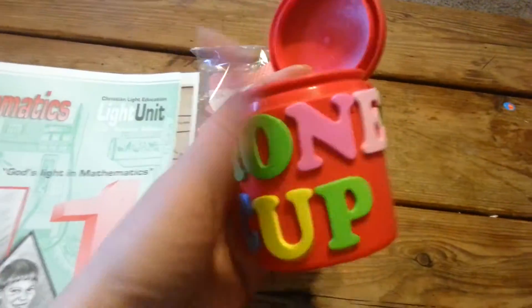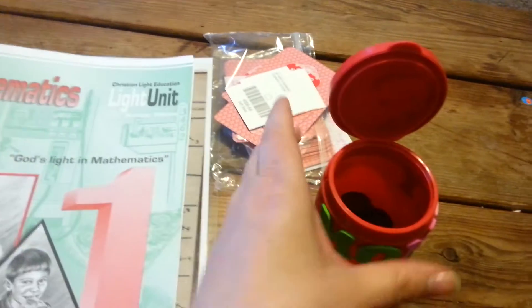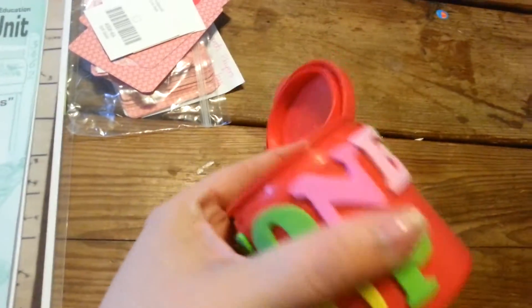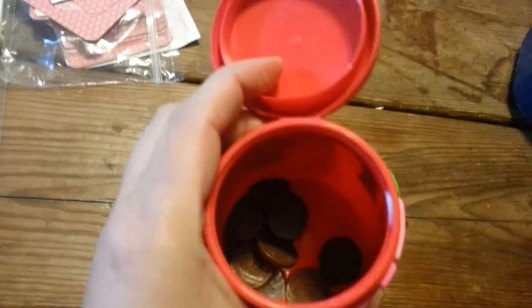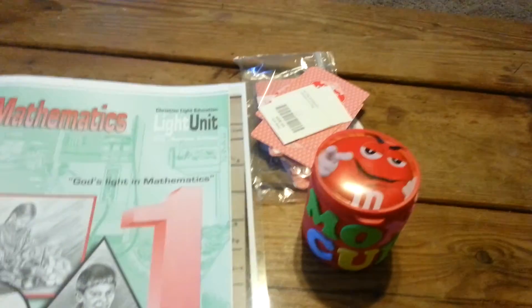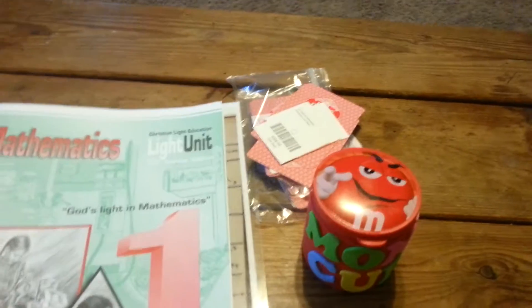And then he also has this money cup. This is what CLE uses. So I pretty much just recycled the cup and it's got the money in there. And he figures out how much money is in there and he writes it in his workbook. So that's what he did for math.